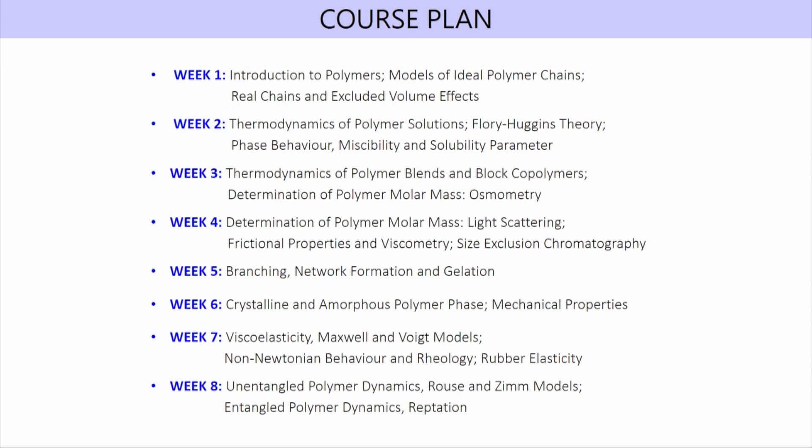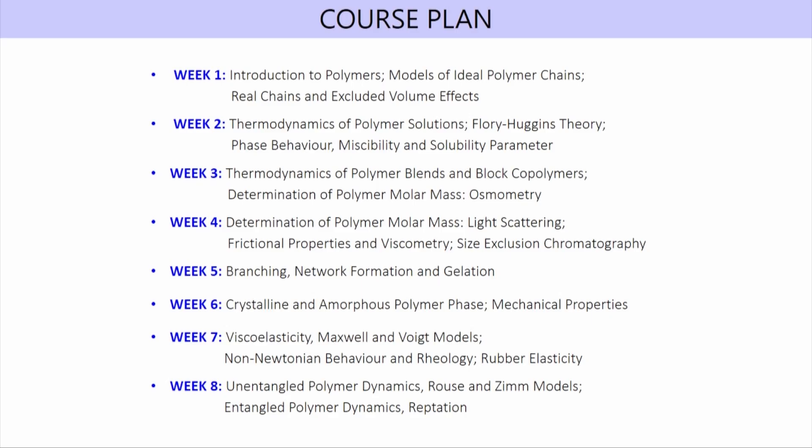We will talk about branching, network formation and gelation in polymeric materials. Next, we will discuss the crystalline and amorphous phases of polymer materials. Polymeric materials in general are semi-crystalline, consisting of both a crystalline phase and an amorphous phase, both of which have their distinct properties. We will discuss these phases in detail and also talk about the mechanical properties of polymers — in particular, the viscoelastic behavior of semi-crystalline polymeric materials and the rubber elasticity of elastomeric materials.